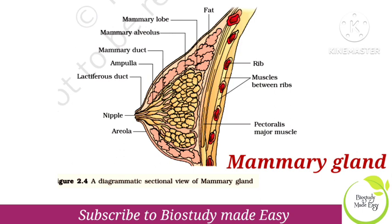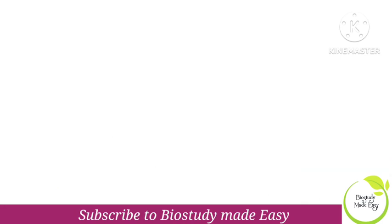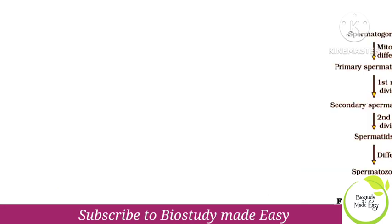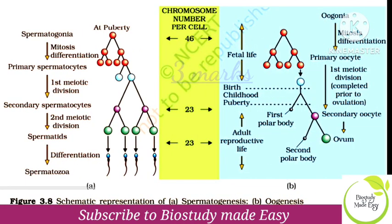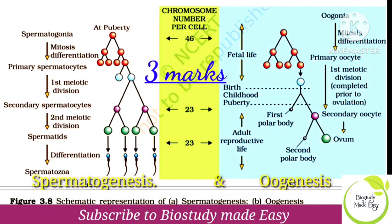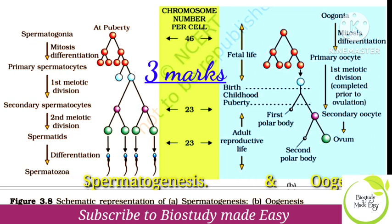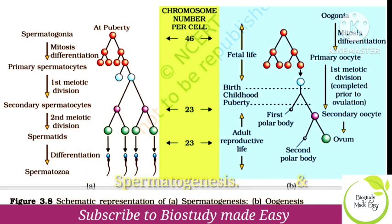These are five marks or three marks. Another important diagram is the schematic representation of spermatogenesis and oogenesis. You should see one, throughout three marks. And you have other important marks here — these are two major important questions.